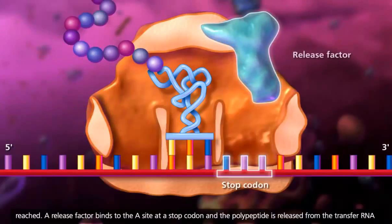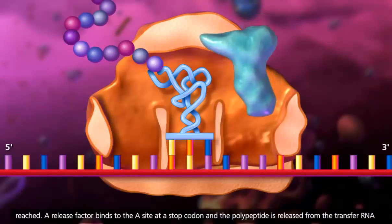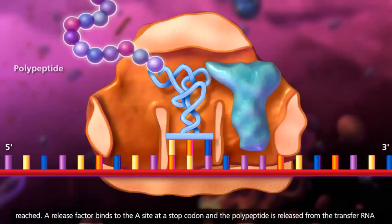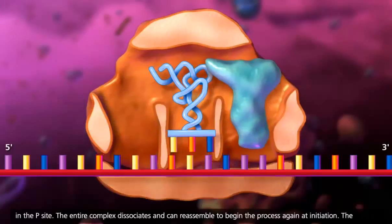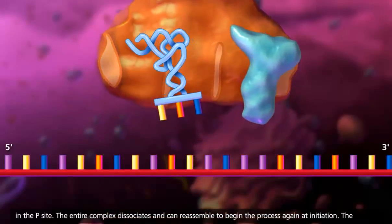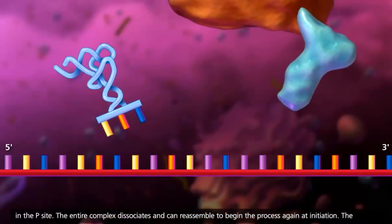A release factor binds to the A site at a stop codon and the polypeptide is released from the transfer RNA in the P site. The entire complex dissociates and can reassemble to begin the process again at initiation.